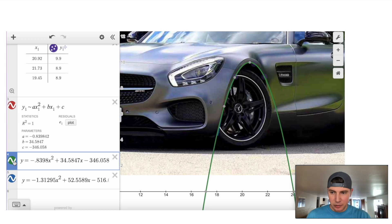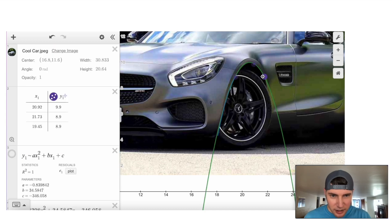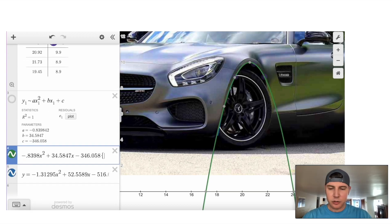And this time it's y equals negative 0.8398 x squared plus 34.58x minus 346.058. And then once again, if I turn this green one off, we can see that it matches that red one exactly. So let's turn the red one off and let's set our limits.